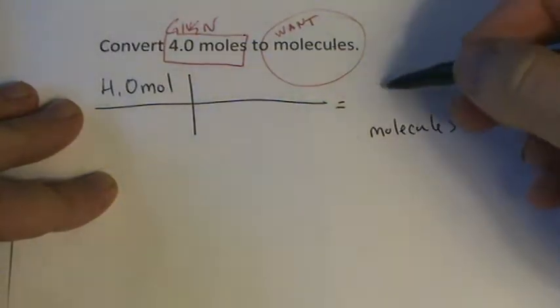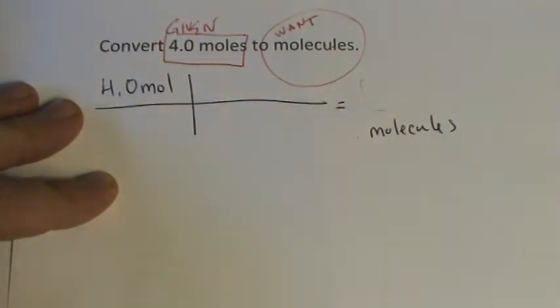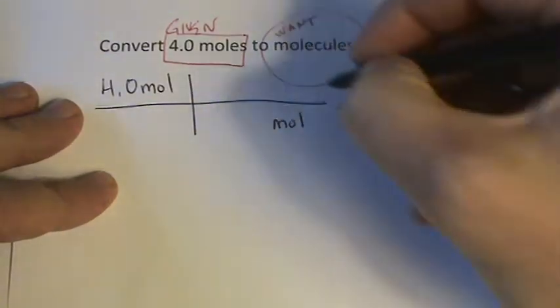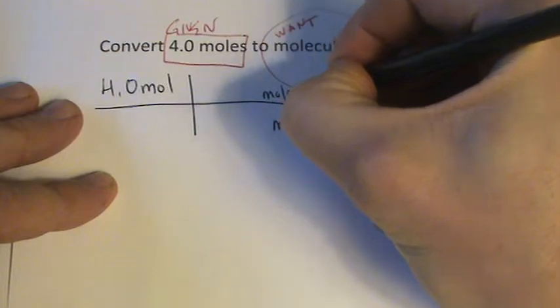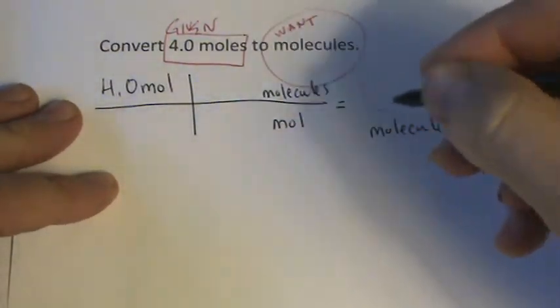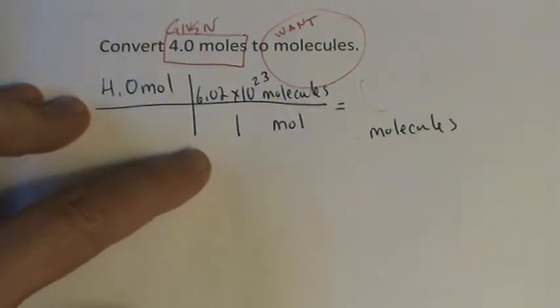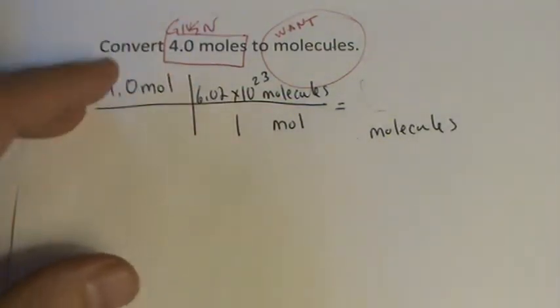I put it a little lower so I can put my number up here. Well, I've got moles here, and I need to have molecules up top. So I happen to know that one mole is equal to Avogadro's number, or 6.02 times 10 to the 23rd molecules. That's just something you memorize, one mole is Avogadro's number of molecules.